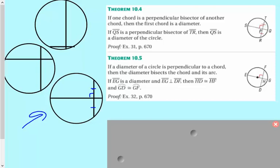If one chord is a perpendicular bisector of another chord, then that first chord, as I mentioned, this guy right here, will be the diameter. And then the second one is kind of like the converse of that. If a diameter of the circle is perpendicular to a chord, then the diameter is going to bisect the chord and its arc.